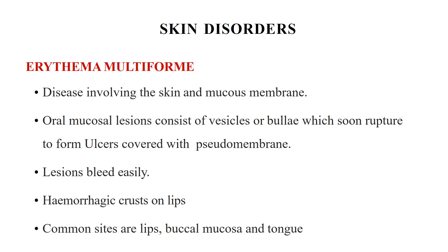Many skin disorders can also present with oral ulcerations. The first is erythema multiforme, a disease of rapid onset involving the skin and mucous membranes. Oral mucosal lesions consist of vesicles or bullae which soon rupture to form ulcers covered with a pseudomembrane, and the lesions bleed easily. The etiology is unknown but may be associated with drug allergy like sulfonamides or recent herpes simplex infection. Common sites are the lips, buccal mucosa, and tongue.